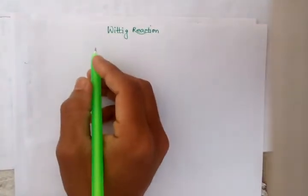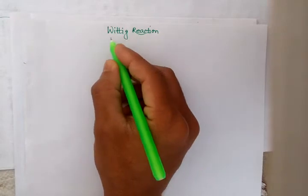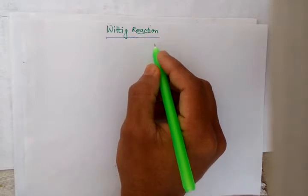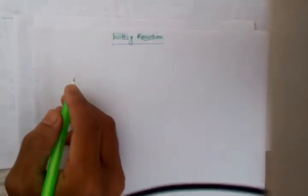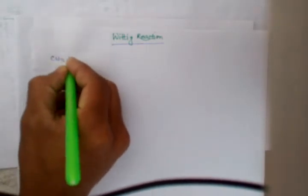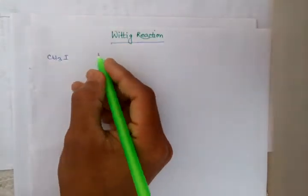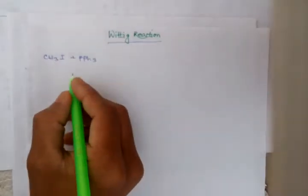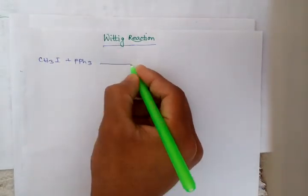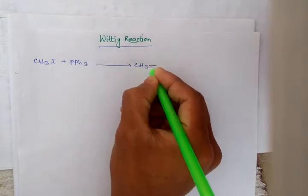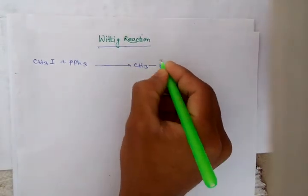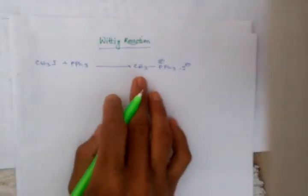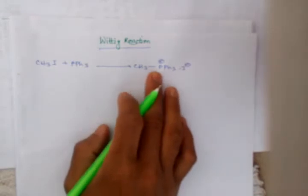Hello friends, today I am going to discuss the Wittig reaction. It is very useful in organic synthesis. Methyl iodide is heated with triphenyl phosphine to give this salt, methyl triphenyl phosphonium iodide.